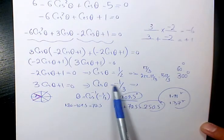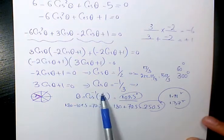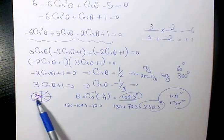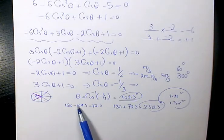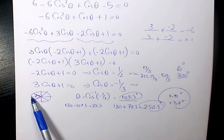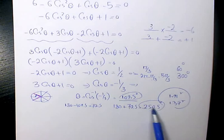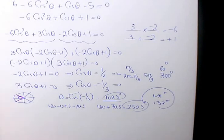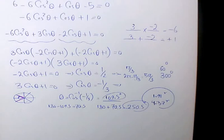To review: cosine theta equals negative 1 over 3, so theta equals inverse cosine of negative 1 over 3. I got 109.5 degrees in quadrant 2. For quadrant 3, I found 180 minus 109.5 equals 70.5 degrees, so the angle is 180 plus 70.5 equals 250.5 degrees. Converting both to radians gives 1.91 and 4.37 radians. So these are the two answers for the second case, giving us four answers total to this question.